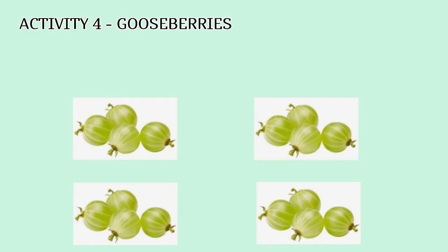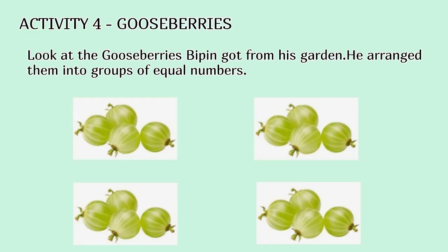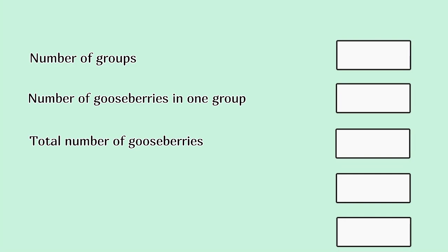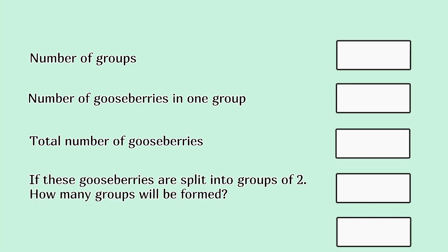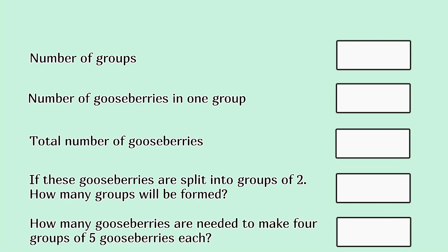Activity 4, Gooseberries. Look at the gooseberries Bipin got from his garden. He arranged them into groups of equal numbers. Number of groups, number of gooseberries in one group, total number of gooseberries. If these gooseberries are split into groups of 2, how many groups will be formed?